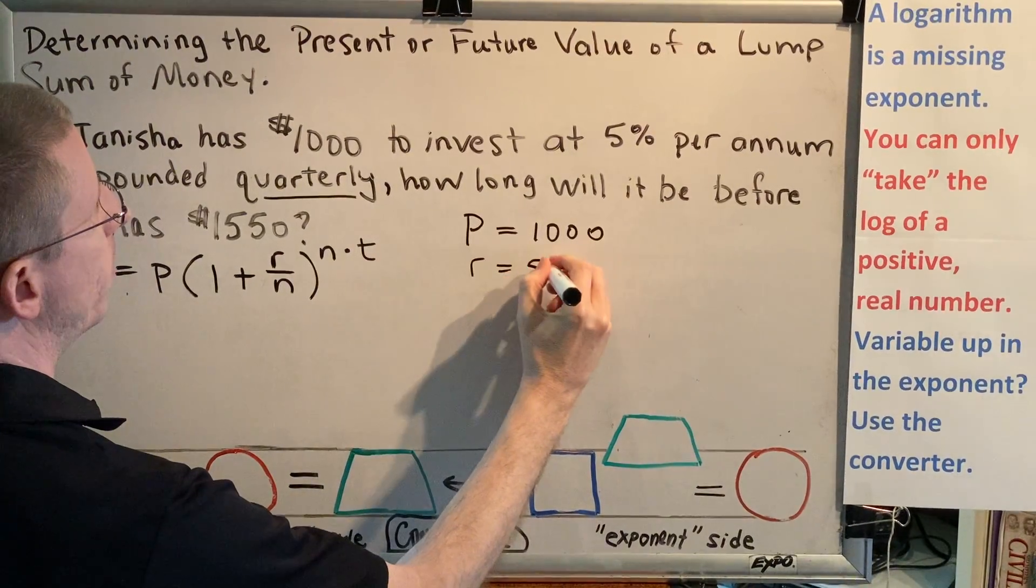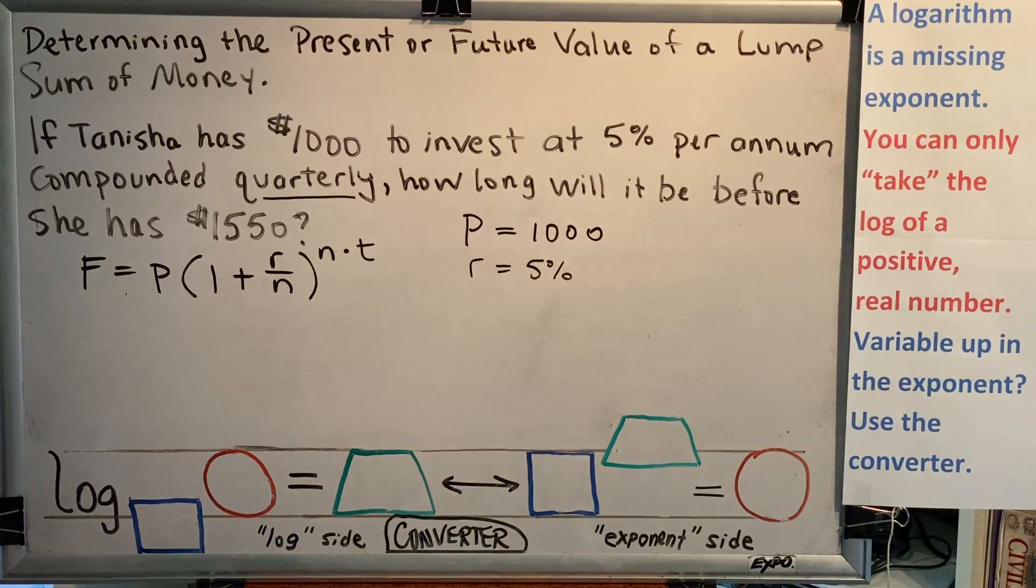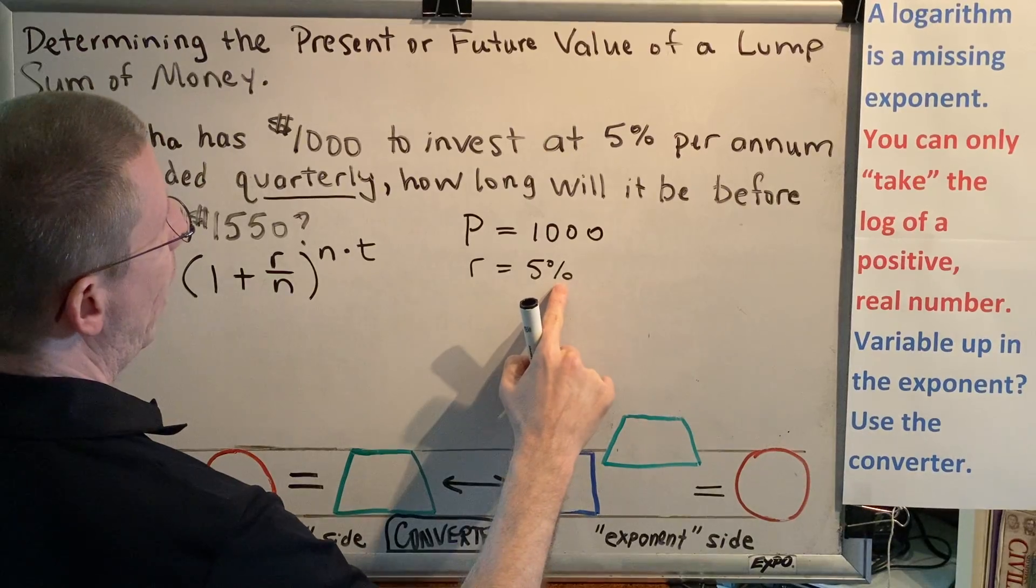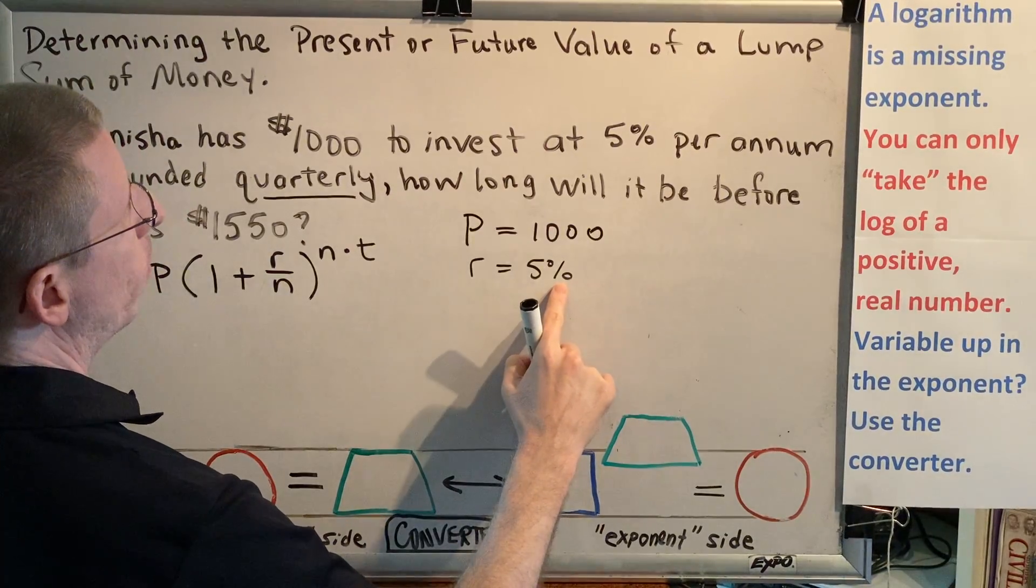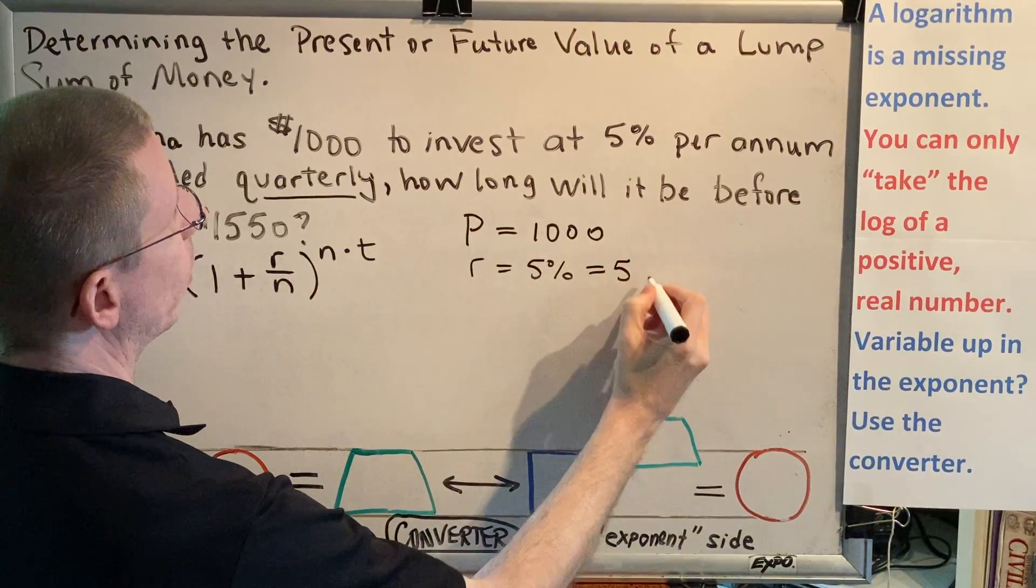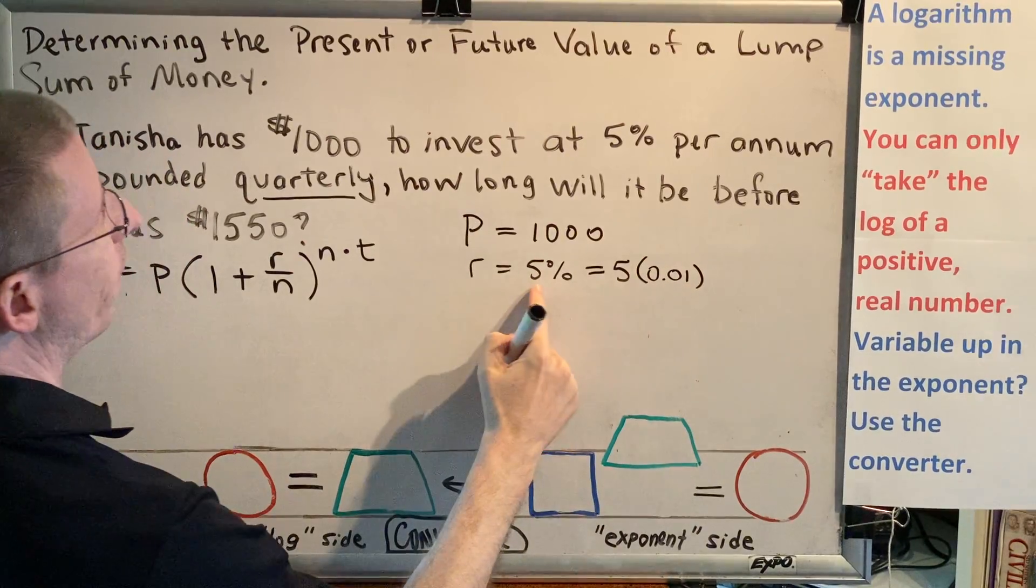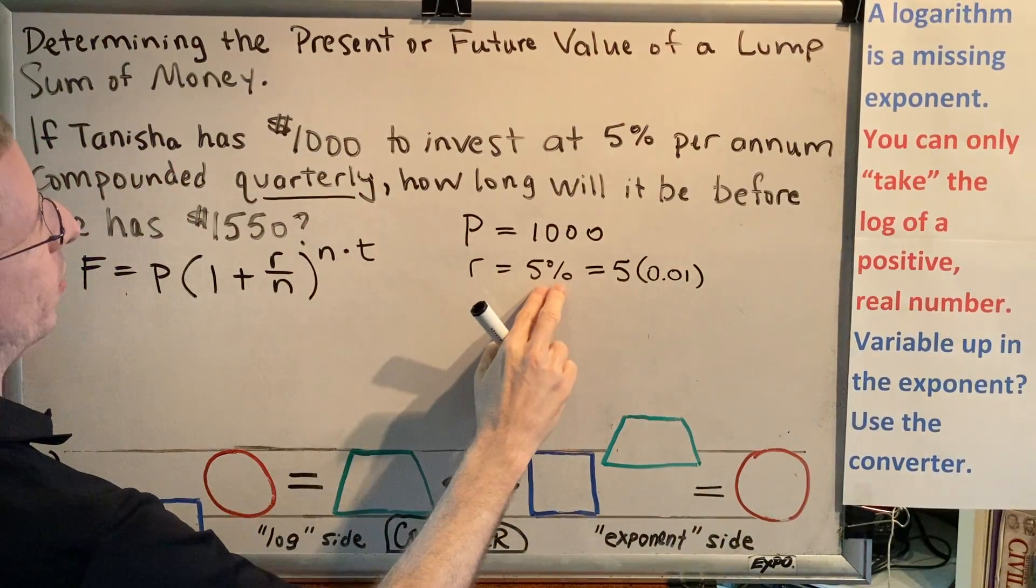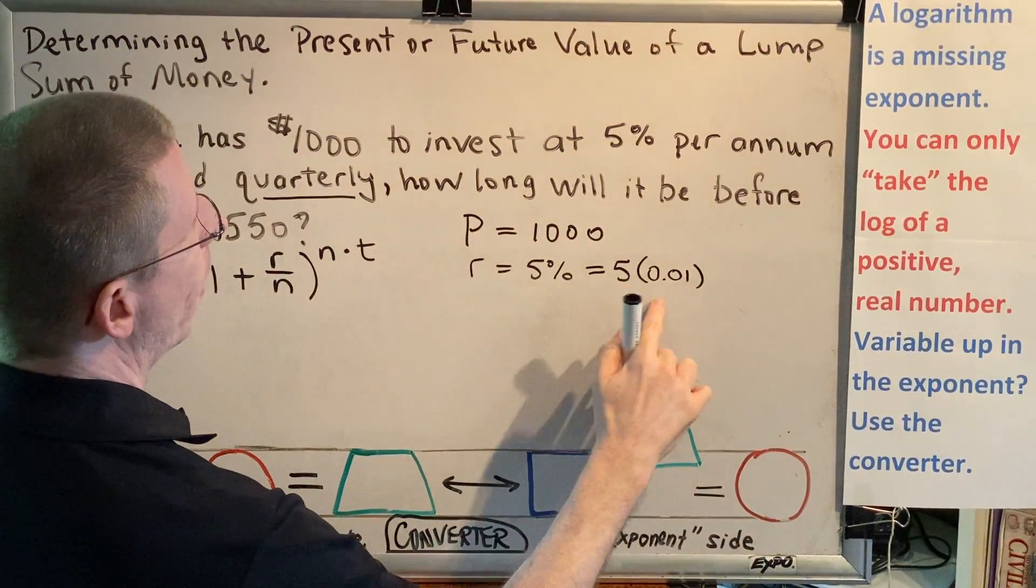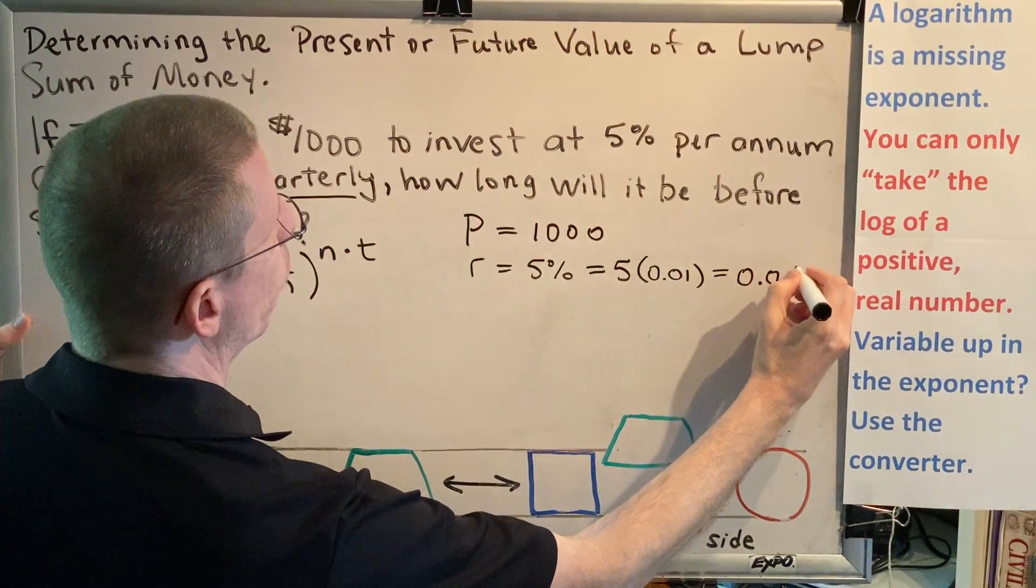And even though R is described as a percent in the problem, it has to be converted to a decimal in order to be put in the formula. Like PI and E, percent is a symbol that always represents the same number. The percent symbol is the decimal 0.01. And since the 5 and the percent are side by side, which represents multiplication, we multiply 5 times 0.01, which gives us 0.05.